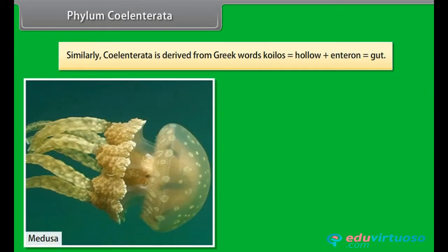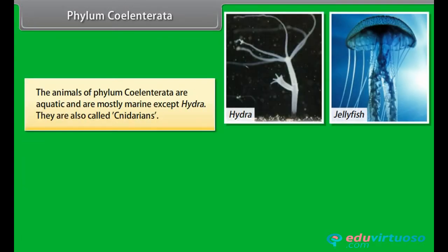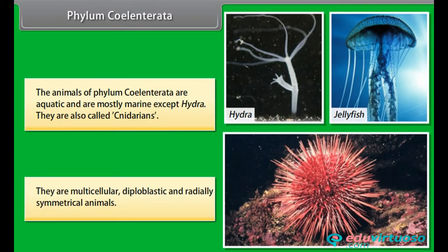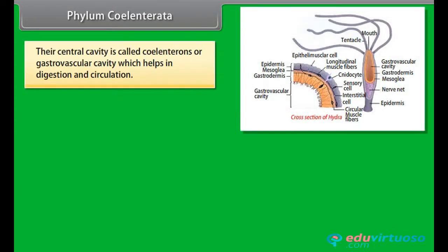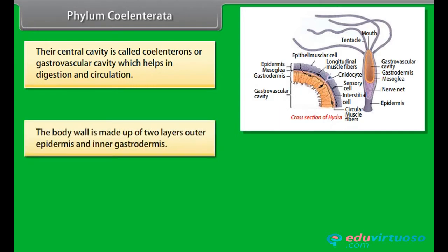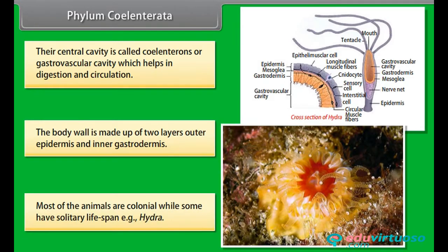Coelentrata is derived from Greek words coelos, meaning hollow, plus enteron, meaning gut. The animals of phylum Coelentrata are aquatic and mostly marine except Hydra. They are also called cnidarians. They are multicellular, diploblastic, and radially symmetrical animals. Their central cavity is called coelenteron, or gastrovascular cavity, which helps in digestion and circulation. The body wall is made up of two layers: outer epidermis and inner gastrodermis. Most of the animals are colonial, while some have solitary lifestyle, that is Hydra.